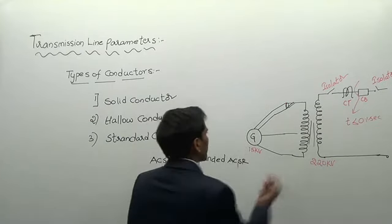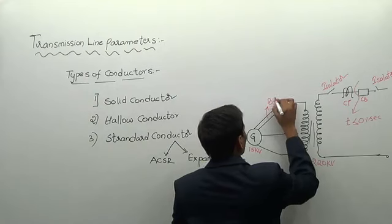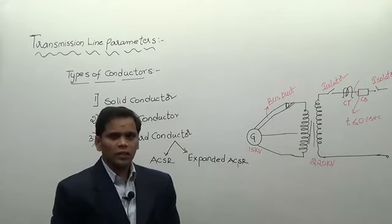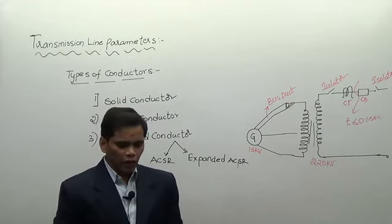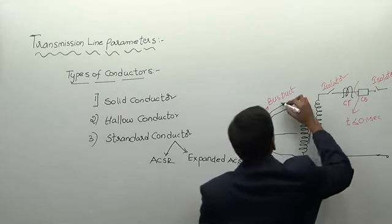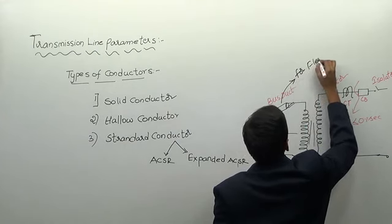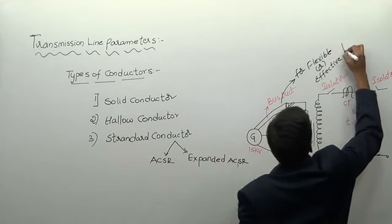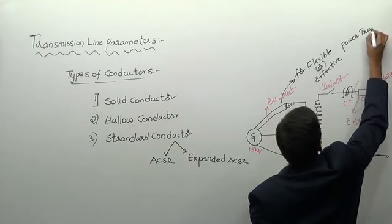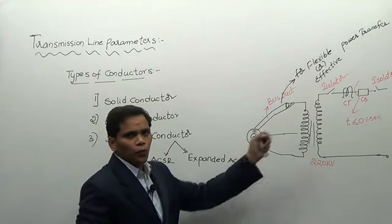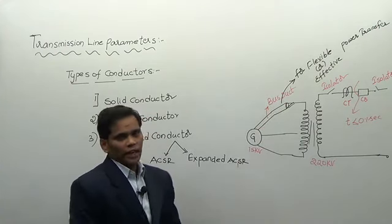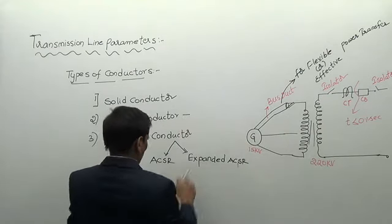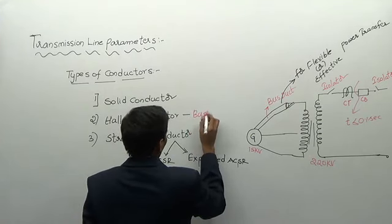The conductor connecting the output terminals of the generator is made up of a bus duct. A bus duct is mainly used for flexible and effective power transfer. This bus duct is made up of hollow conductor. Not only the bus duct — the isolator is also made up of hollow conductor.